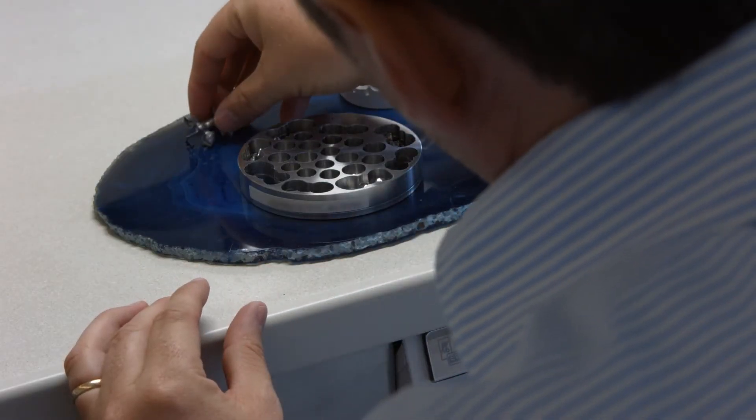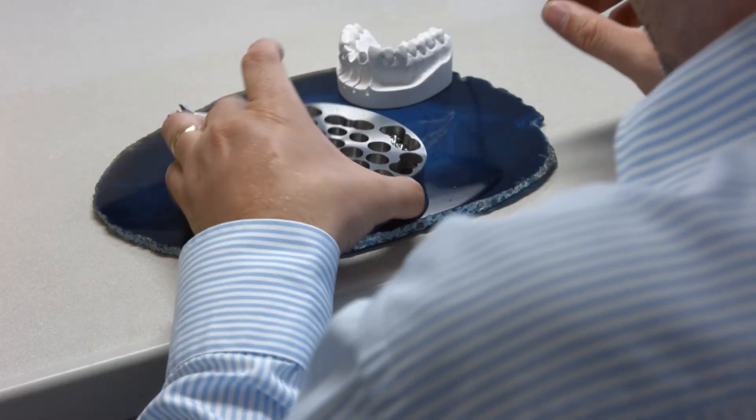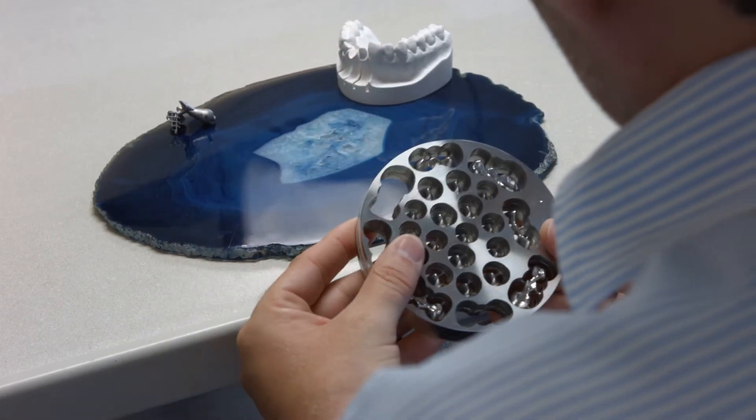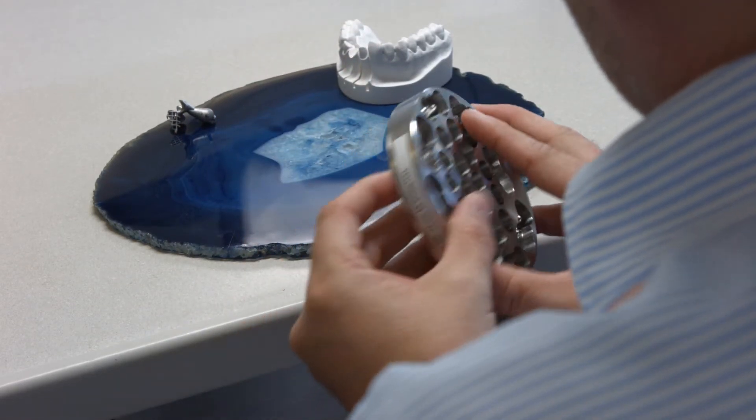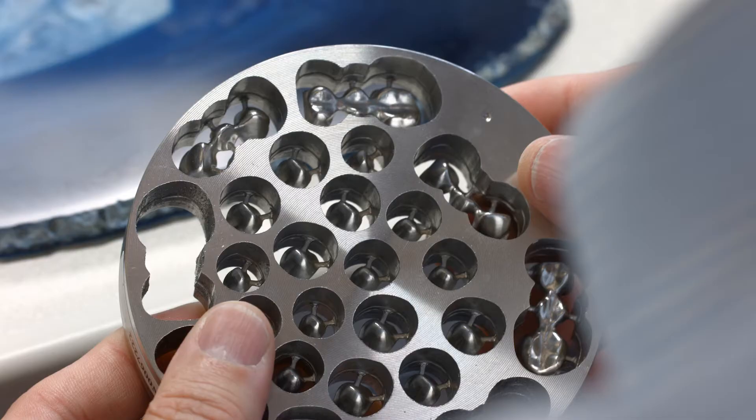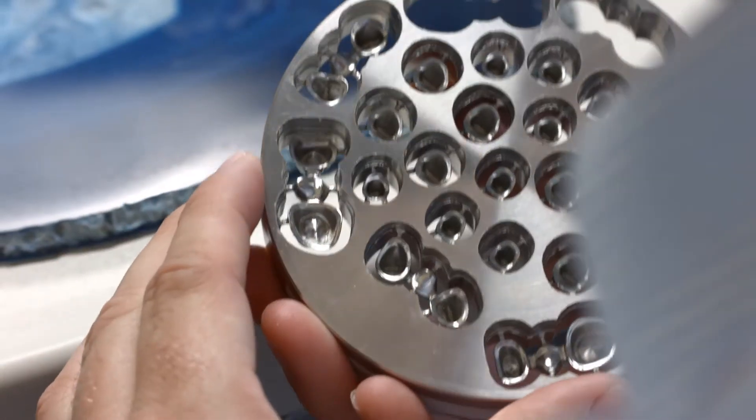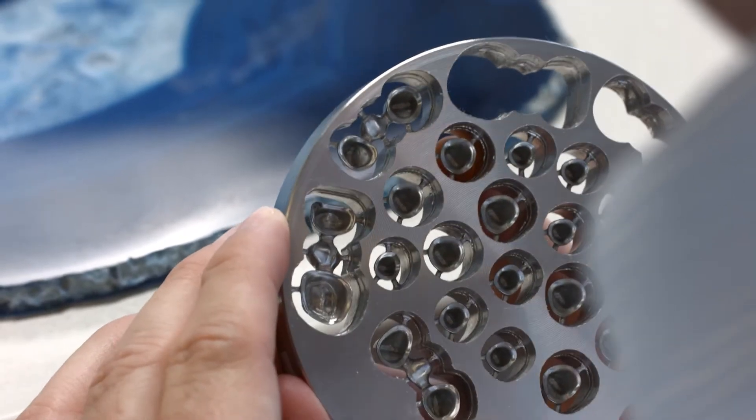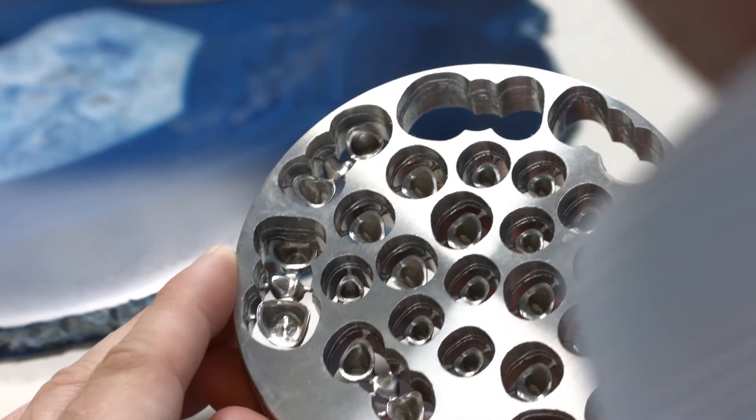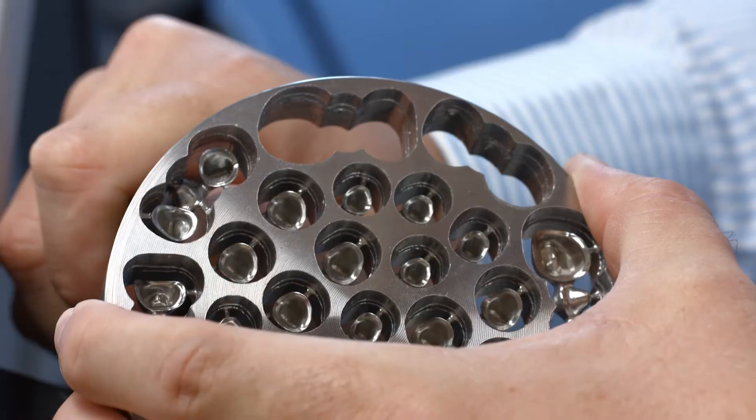Now you can start fabricating your metal framework according to the method of your choice. Follow the planned layering scheme and make sure that the framework has adequate dimensional stability. Avoid sharp edges and transitions. Bear in mind that insufficiently dimensioned metal frameworks will result in increased shrinkage of the veneering ceramic.